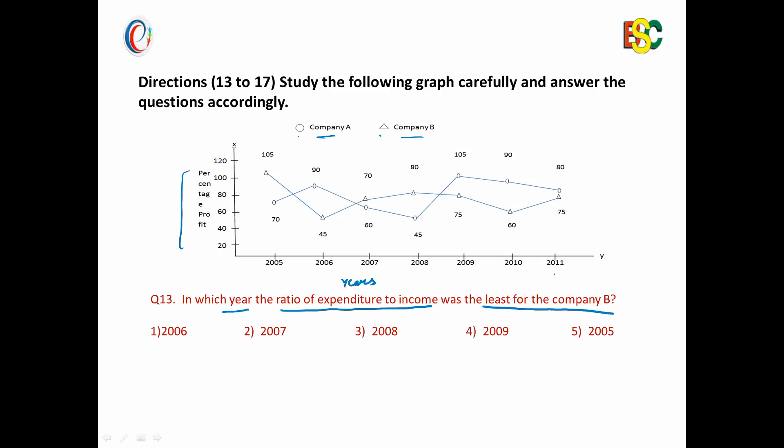Here we have to find the ratio of E to I, least or minimum, for company B only. For this, if you go by the formula percentage profit equals I minus E upon E into 100, we cannot find it as both I and E are not known to us. So students often get confused or find such questions difficult where only percentage profit is given.